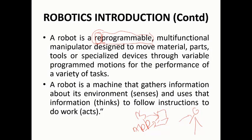A robot is programmable and reprogrammable, and it is a multifunctional manipulator — it has many functions inside. It will try to manipulate and understand its surrounding environment so that it can move. It is designed for manipulation using multi-functional capabilities.